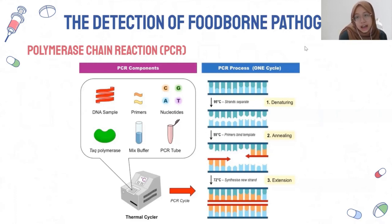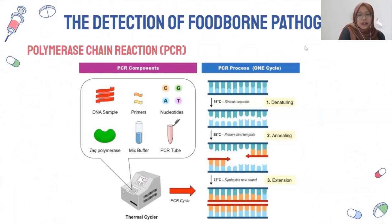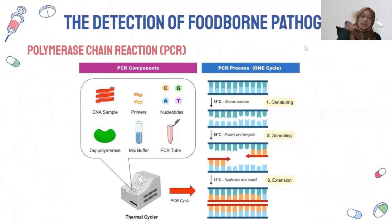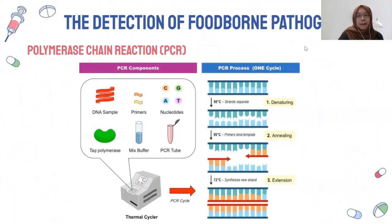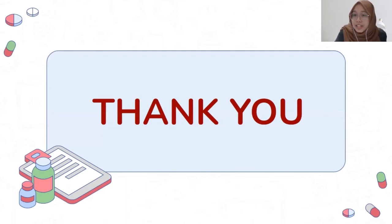What if you do not have a thermal cycler? You can still run PCR by setting up three water baths — one at 95°C for denaturing, one at 55°C for annealing, and one at 72°C for extension. That concludes our presentation today. Thank you so much for listening. We hope you gained a lot of knowledge about new and emerging foodborne pathogens.